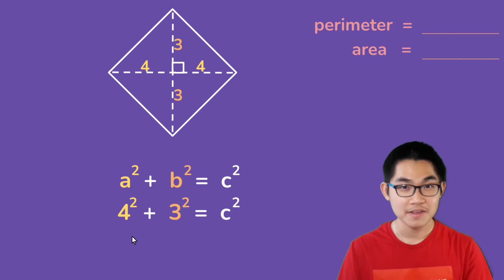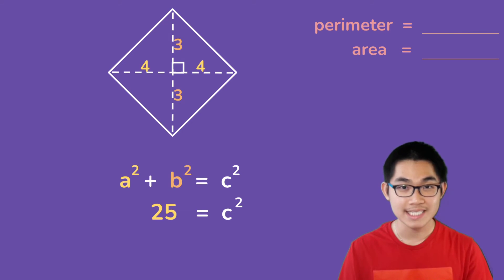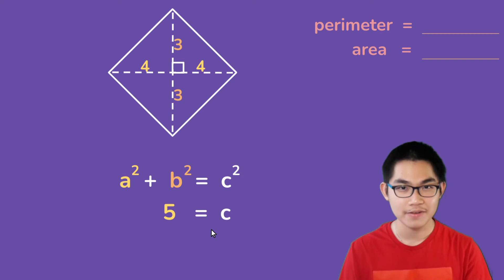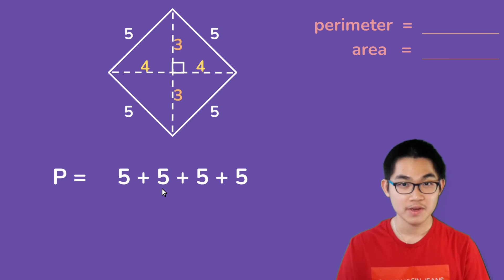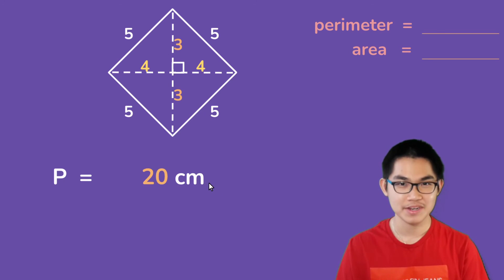Here, a is 4 and b is 3. So 4 squared gives you 16 and 3 squared gives you 9. 16 plus 9 gives you 25, and taking the square root of both sides leaves us with c equal to 5. So this side is 5, and if you calculate the other sides you also get 5. The perimeter is 5 plus 5 plus 5 plus 5, which is 20 centimeters.